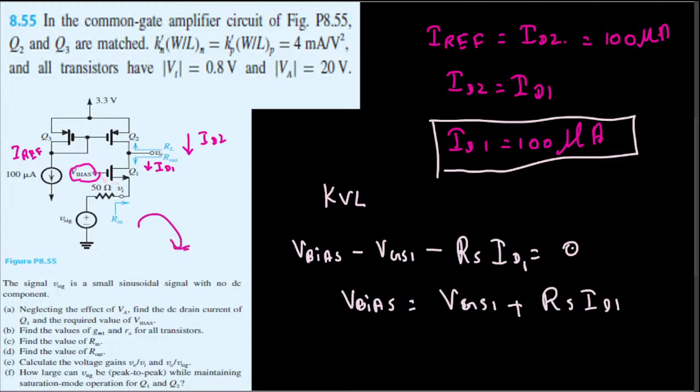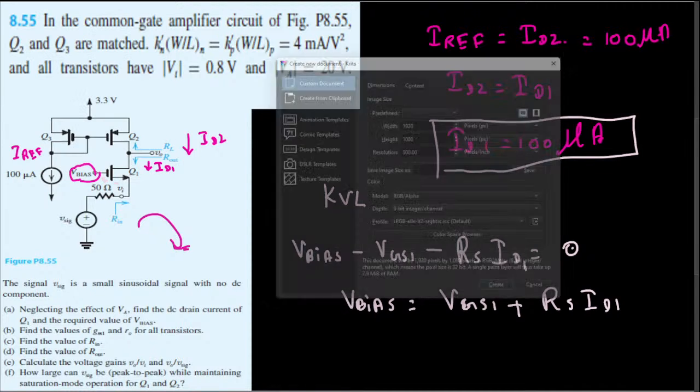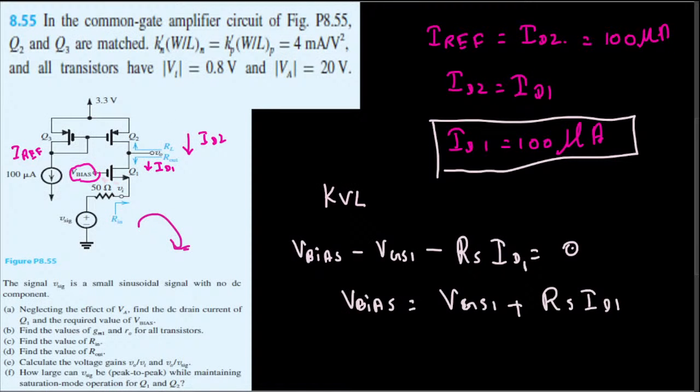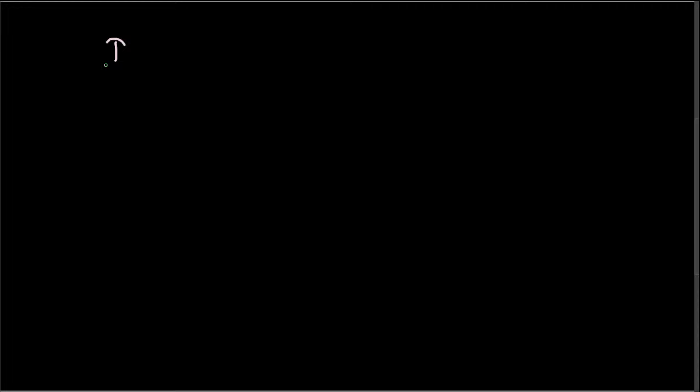This is the NMOS right here. So we can say I_D1 is equal to half μ_n C_ox times (W/L)_n times (V_overdrive)². V_overdrive is nothing but V_GS minus V_threshold.